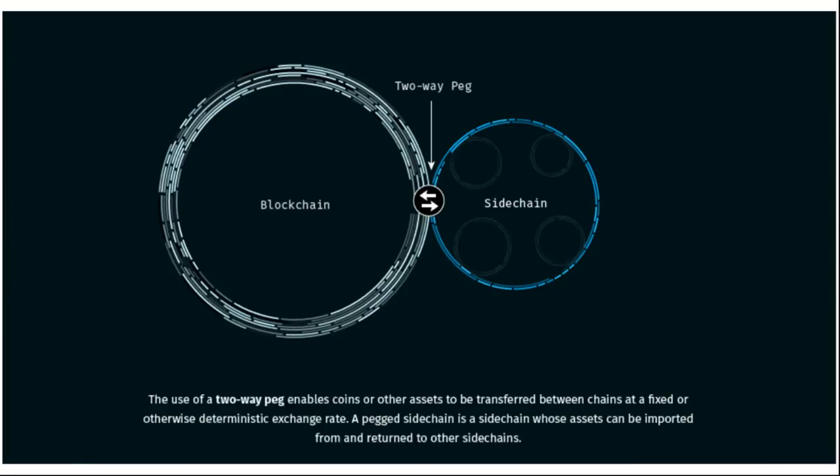The use of a two-way peg enables coins and other assets to be transferred between chains at a fixed or otherwise deterministic exchange rate. A pegged side chain is a side chain whose assets can be imported from and returned to other side chains.